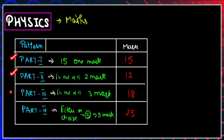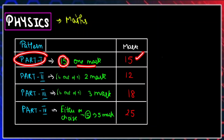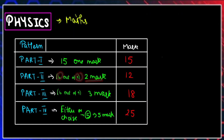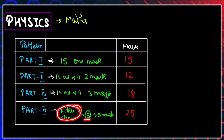We have 4 parts. Part 1, Part 2, Part 3, and Part 4. Part 1 has one section to do. Part 2 has two sections: 9 and 6. Part 3 also has two sections. Part 4 uses a total mark of 25.